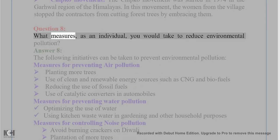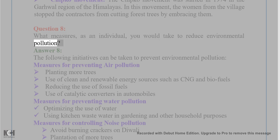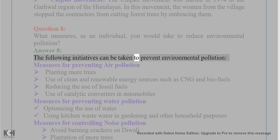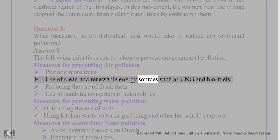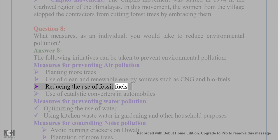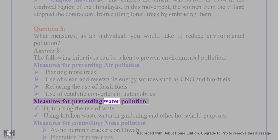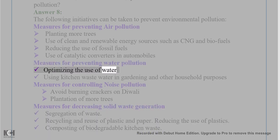Question 8: What measures, as an individual, would you take to reduce environmental pollution? Answer: Measures for preventing air pollution include planting more trees, use of clean and renewable energy sources such as CNG and biofuels, reducing the use of fossil fuels, and use of catalytic converters in automobiles. Measures for preventing water pollution include optimizing the use of water and using kitchen wastewater in gardening and other household purposes.